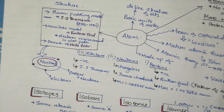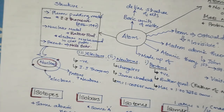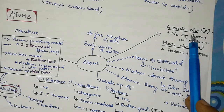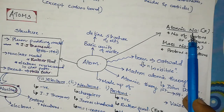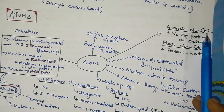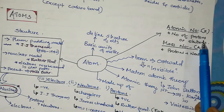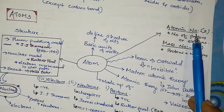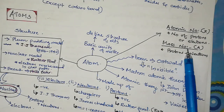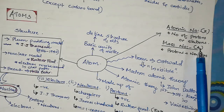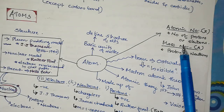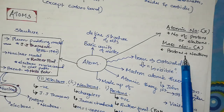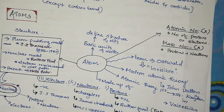The atomic number is represented by the letter Z. The atomic number is the number of protons, which equals the number of electrons. The mass number is represented by A, and is the number of protons plus neutrons.